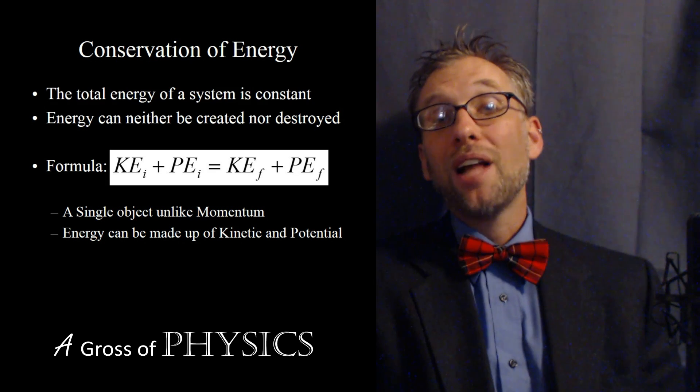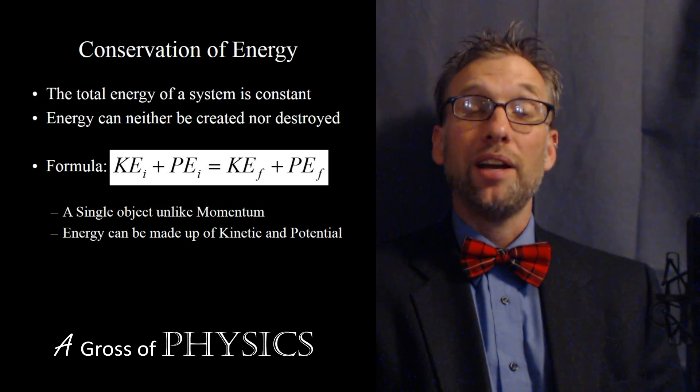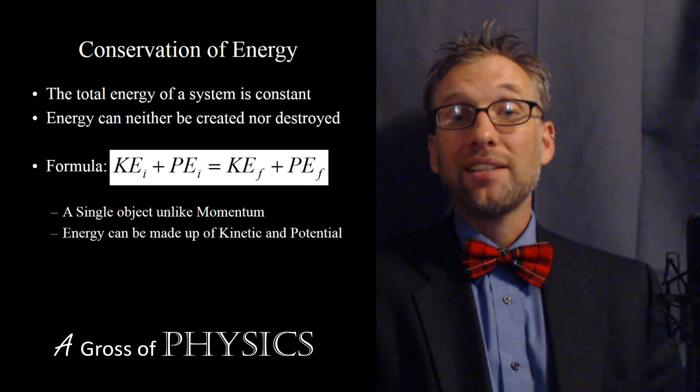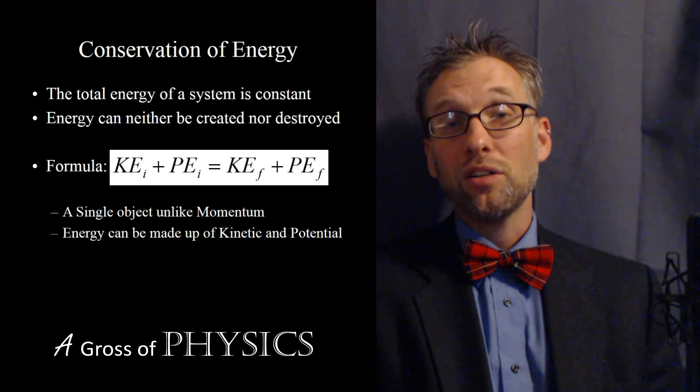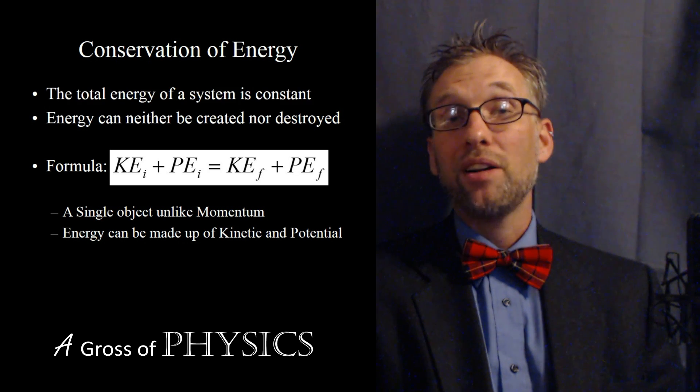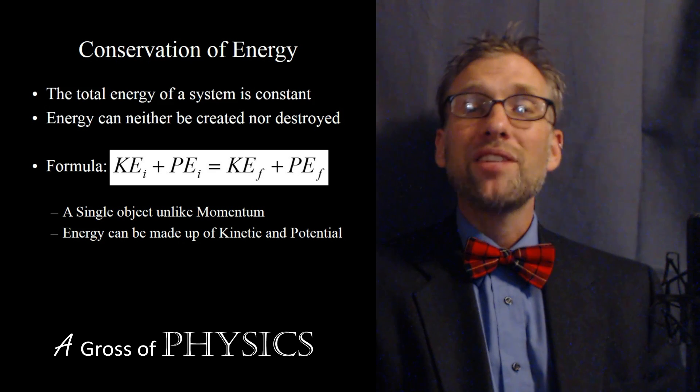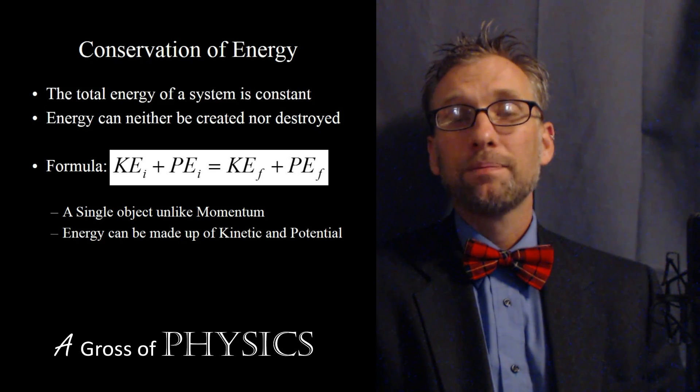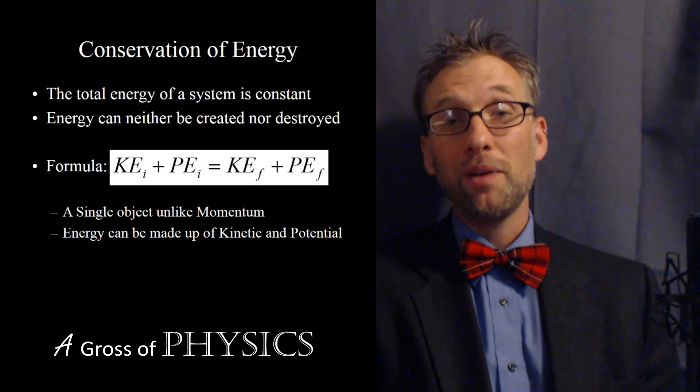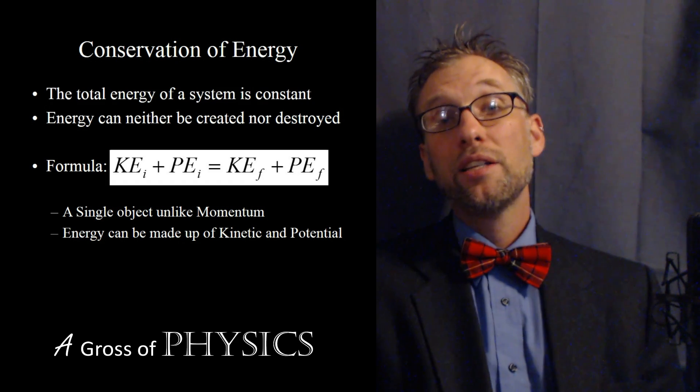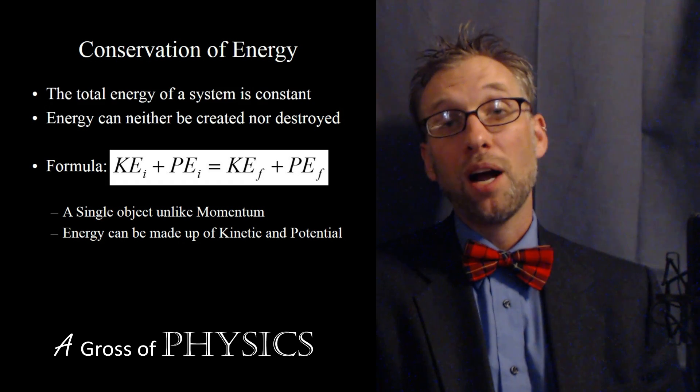But instead of looking at multiple objects, we look at a single object. And the object can have different types of energy. In fact, it can have kinetic, it can have potential, and the potential can be broken down into either gravitational or elastic. Typically, we see gravitational and kinetic energy combined, but a spring could be involved at the beginning of the problem, giving more energy to the object as it moves throughout the problem.